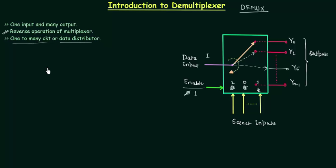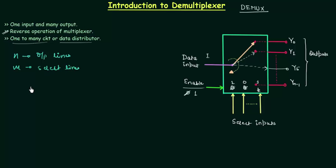Let's try to find out the relation between output lines and select lines. Let's say n is the number of output lines and m is the number of select lines. Then the relation is n equals 2 to the power m. If you want to know the number of select lines depending upon the output lines, you can simply take the log on both sides, so we will have m equals log base 2 of n.